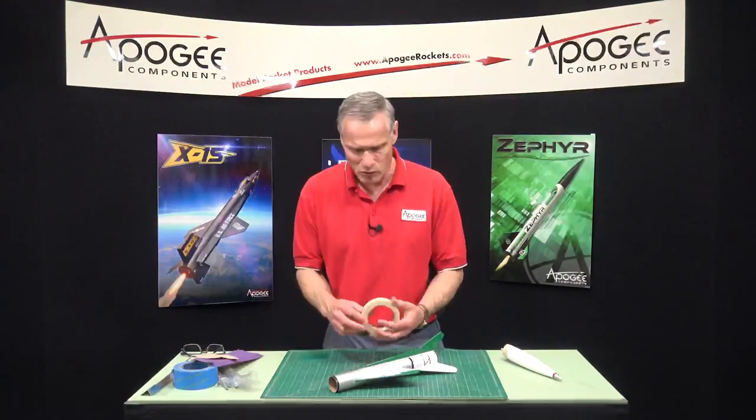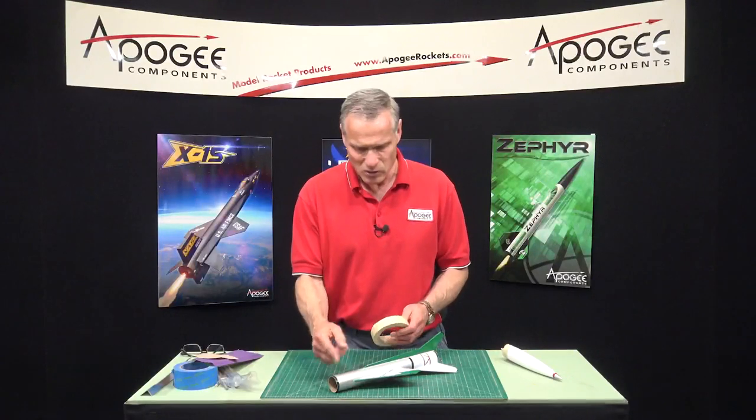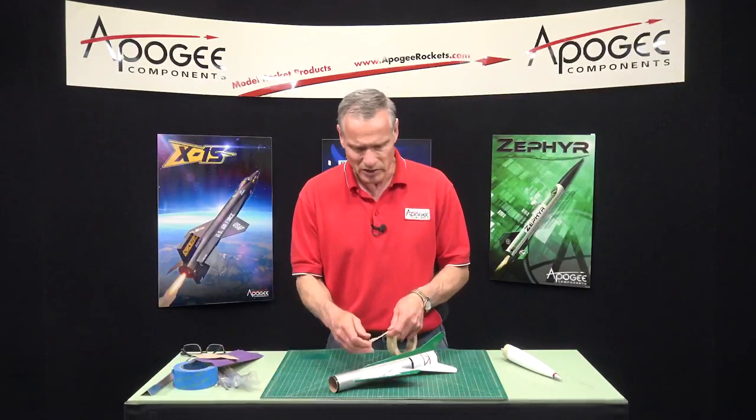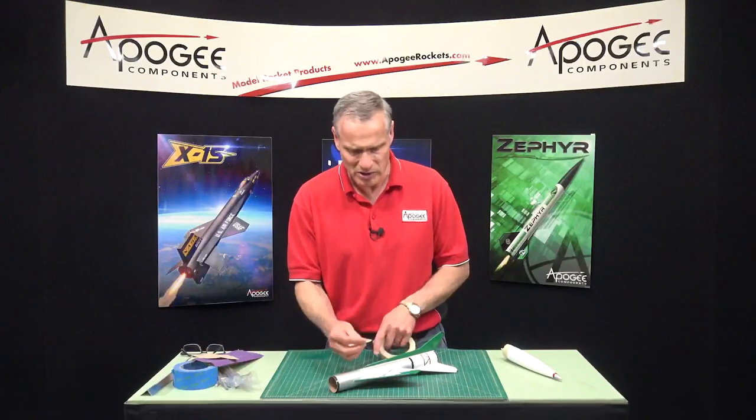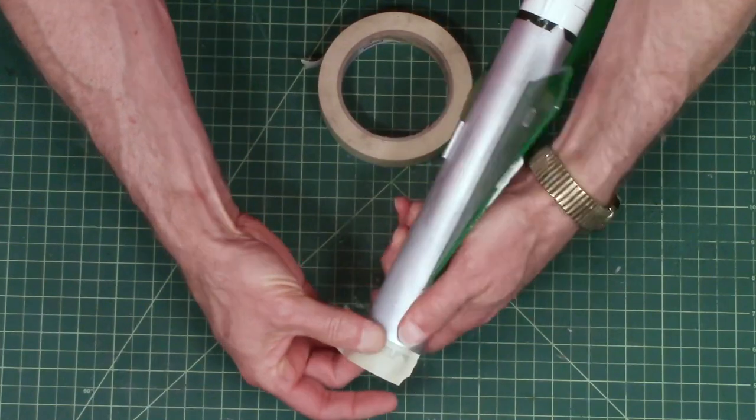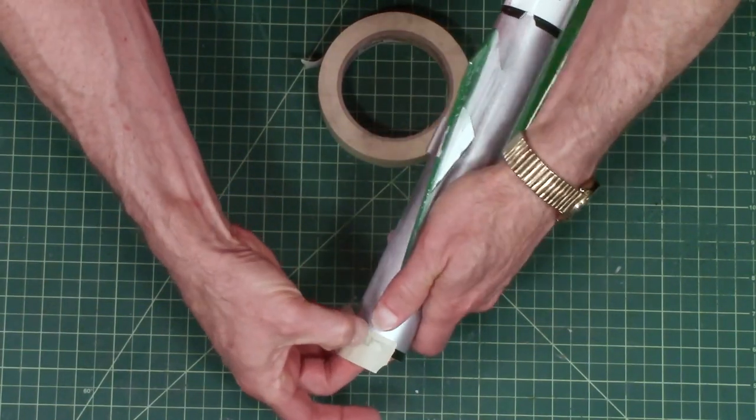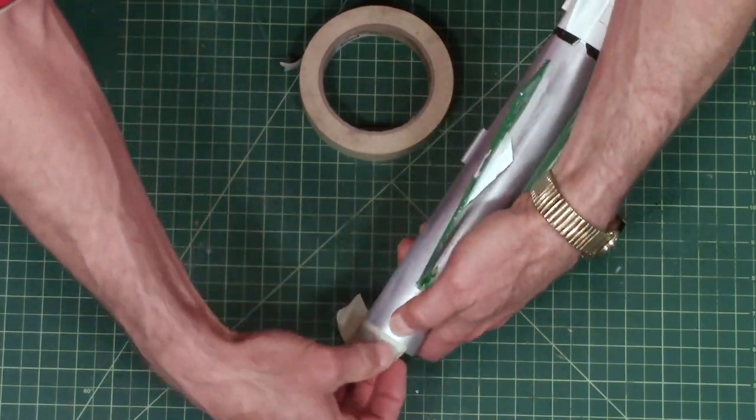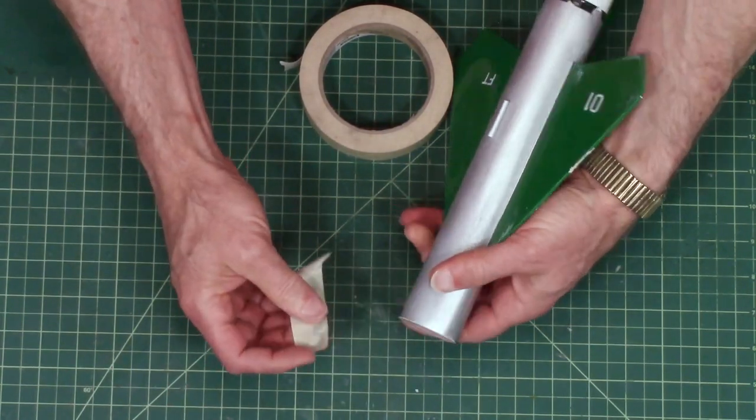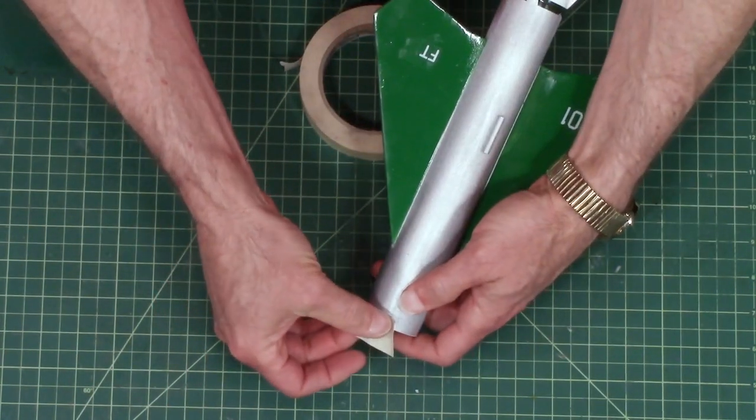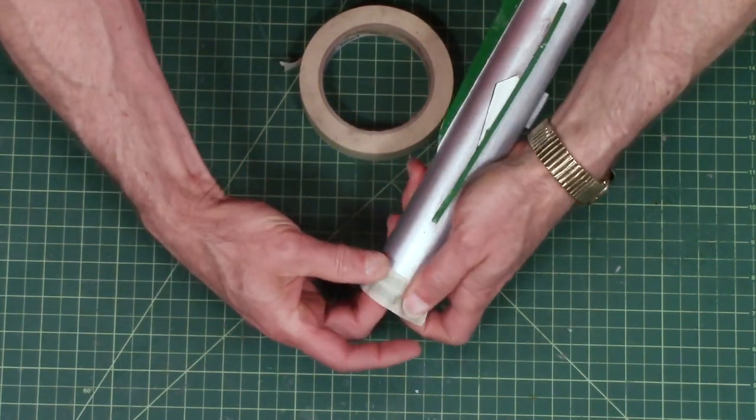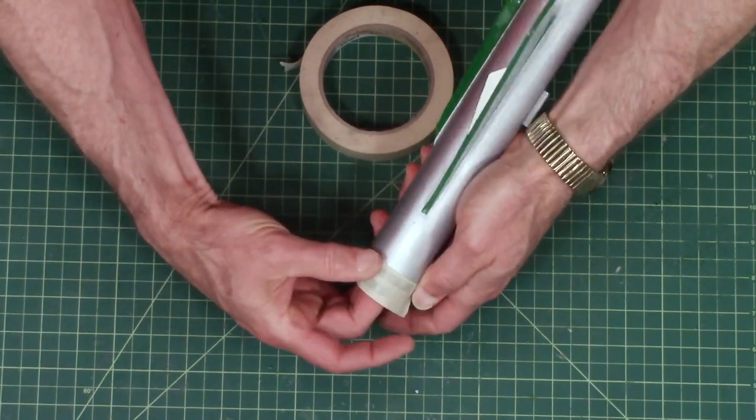So the first step in this process is to try to remove those decals. These are water slide decals. The way I usually take them up, I'll take some masking tape like this and put it around over the decal, press it down, burnish it down real good, and then peel it off. You can see that decal came right off. The decals are going to have to be replaced. Really the only thing to do is to go to the manufacturer of the kit.